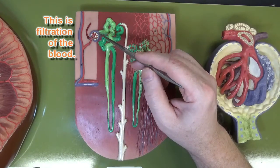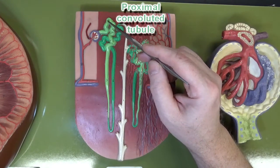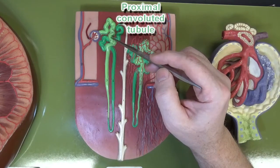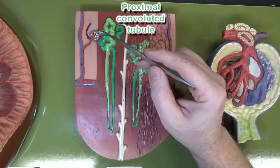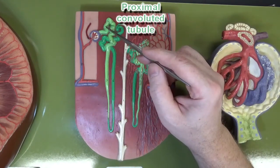Now that filtrate is going to pass through the proximal convoluted tubule, which we could see right here, proximal because it's closest to the glomerular capsule. Convoluted means coiled.